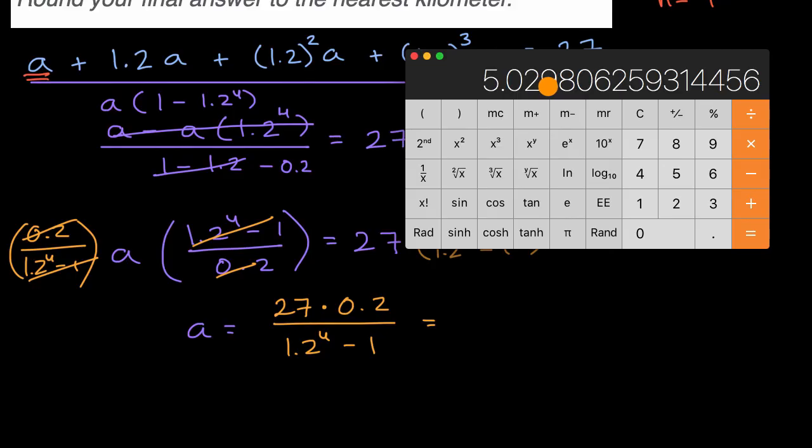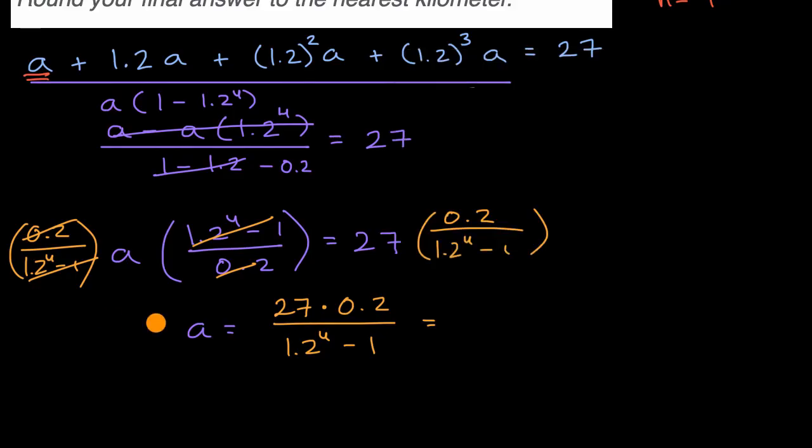Now, they want us to round our answer to the nearest kilometer, so this is going to be approximately equal to five kilometers. That's how much approximately that she would have traveled on the first day of her hiking trip.